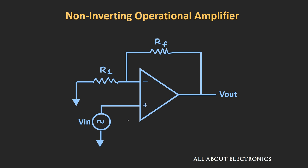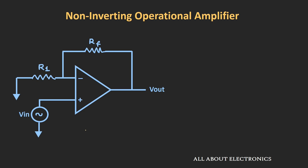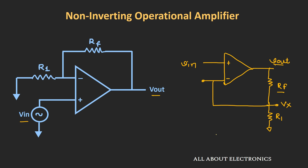For this configuration, let us find the relation between the output and input voltage. Let me redraw the same circuit so that you can have a better idea. Here I have redrawn the same circuit in a different way. We have applied the input to the non-inverting input terminal, and we have a feedback resistance RF between the output and the inverting input terminal. One end of resistance R1 is connected to RF and the other end is connected to ground. So a fraction of the output voltage is going as feedback to the inverting input terminal.